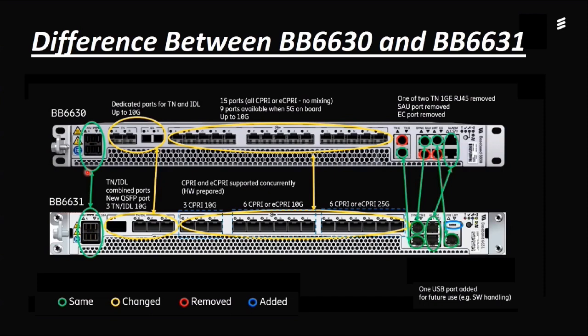A few pieces of equipment in the telecom sector support direct AC current, but most equipment used in telecom does not support AC power directly. If AC is provided, there will be some converter which converts from AC to DC power. So we give only DC power, which is minus 48 volts. We have two ports here — A and B.